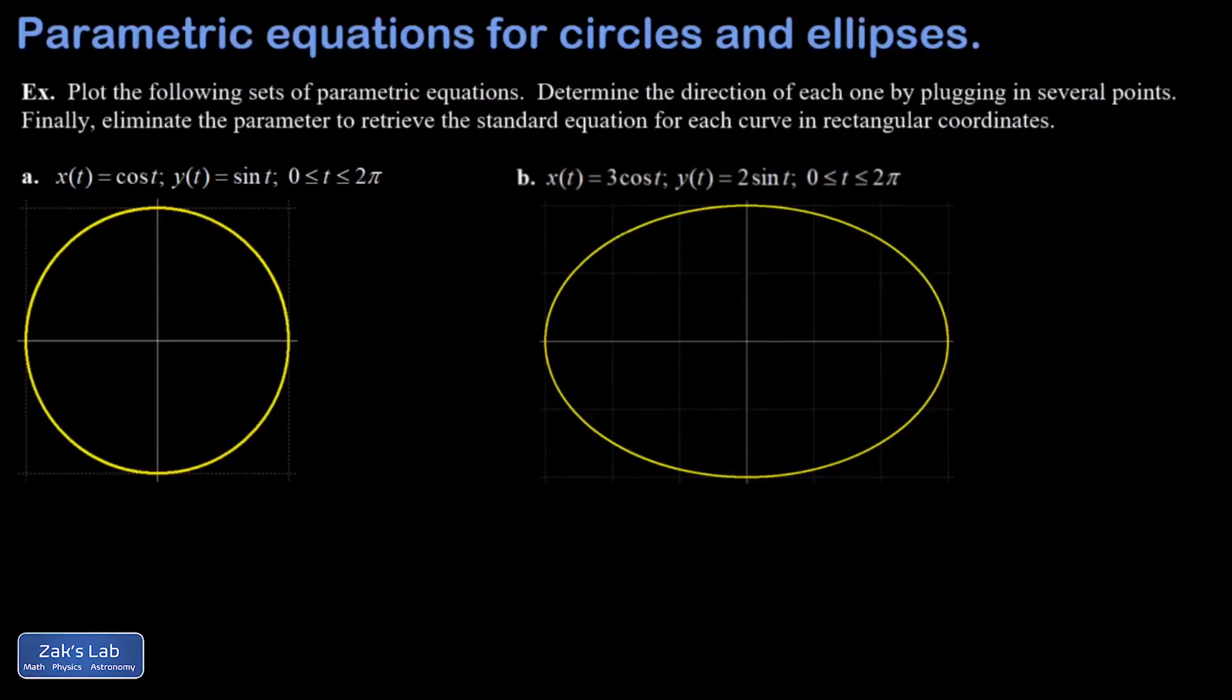In this video we're taking a look at equations for circles and ellipses in parametric form. I've already plotted these things using some plotting software. My first one is x of t equals cosine t, y of t equals sine t, which you may recognize as a description of the unit circle.